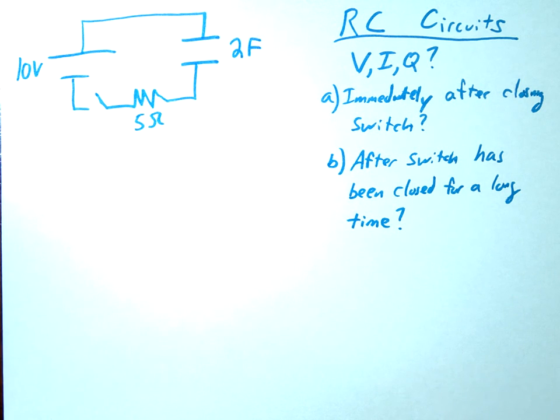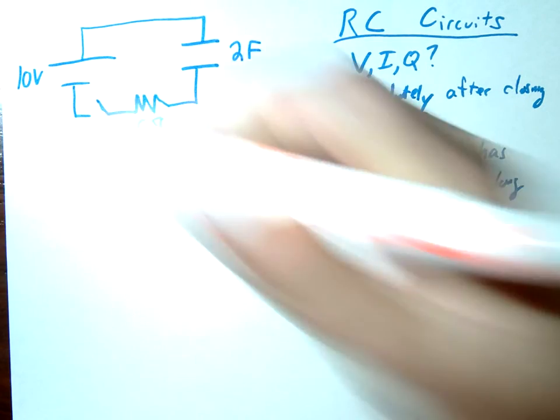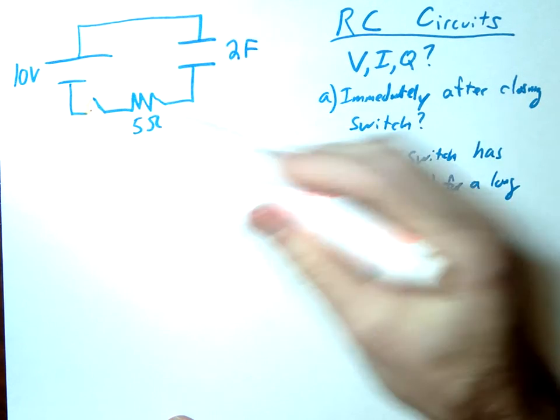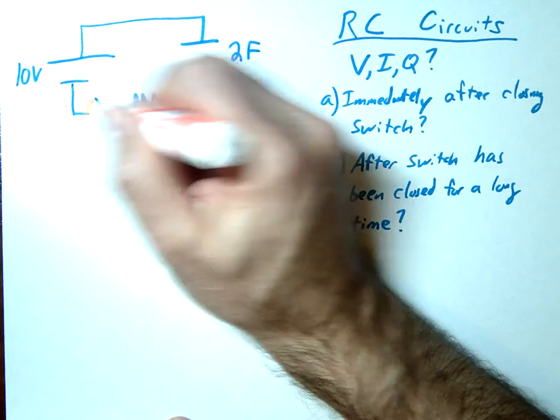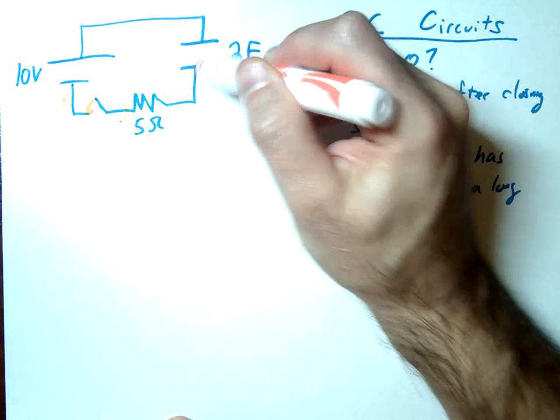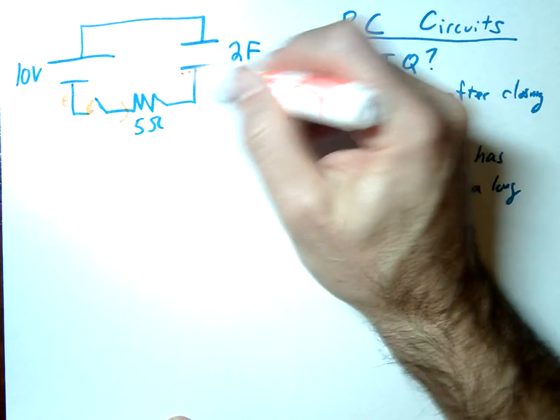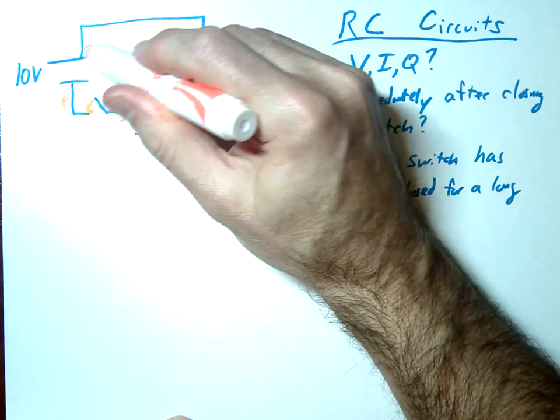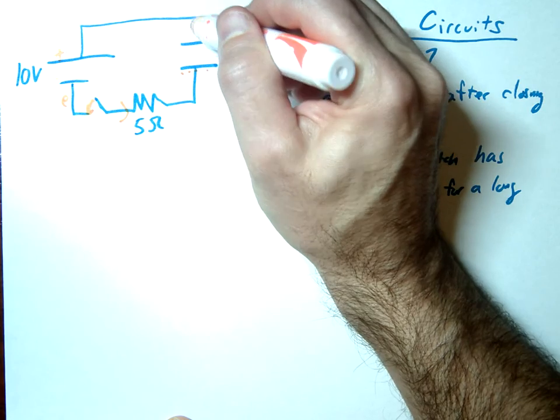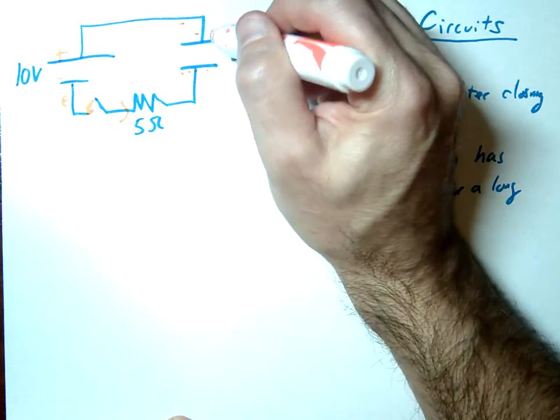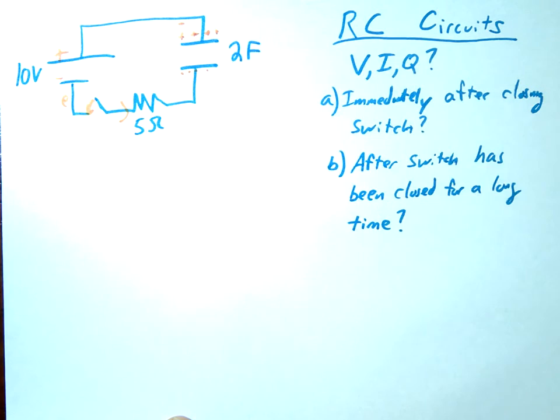Let's just run through what's going to happen conceptually when we close this switch. As soon as we close this switch, we're going to have a path for electrons to flow. We're going to have electrons immediately start flowing through this circuit, and they're going to start accumulating on this end of the plate. At the same time, we have a big positive end over here that's going to attract electrons off of this plate, away from this plate, which means this plate's going to start to take on a positive.